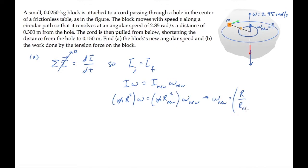Recognizing that the ratio r over the new radius equals 2, we substitute values and calculate, finding the new angular speed of 11.4 radians per second.